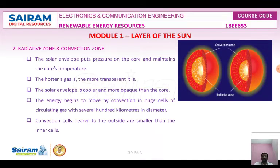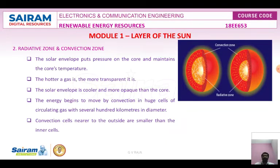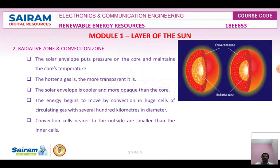The radiative zone and convection zone together are called the solar envelope. Outside the core is the radiative envelope, which is surrounded by the convective envelope. The temperature in this region is about 4 million Kelvin. The density of the solar envelope is much less than that of the core. The core contains 40% of the sun's energy in 10% of the volume, while the solar envelope has 60% of the mass in 90% of the volume. The solar envelope puts pressure on the core and maintains its temperature.